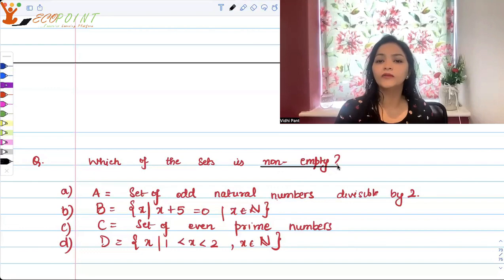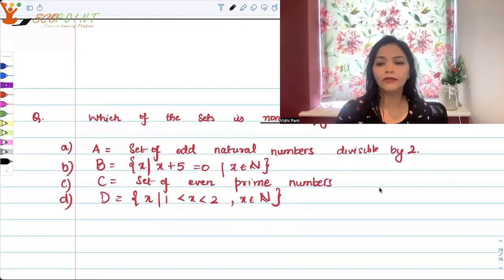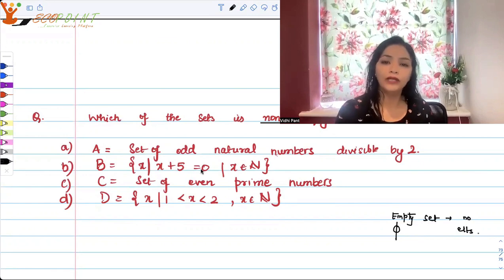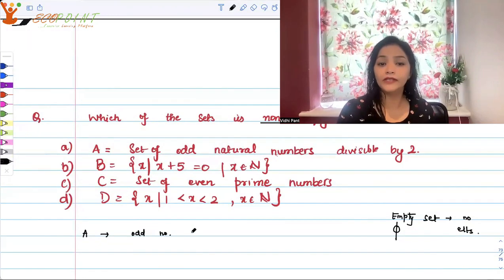Which of these is non-empty? Non-empty means the set of all odd numbers divisible by 2. Can there be any odd number divisible by 2?